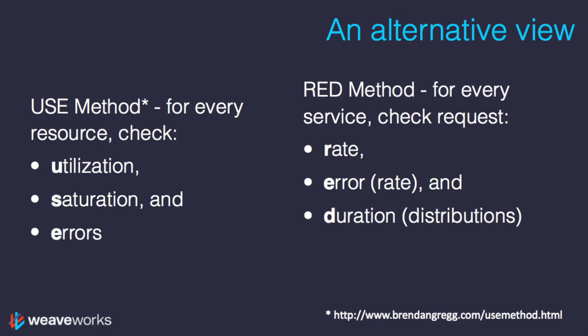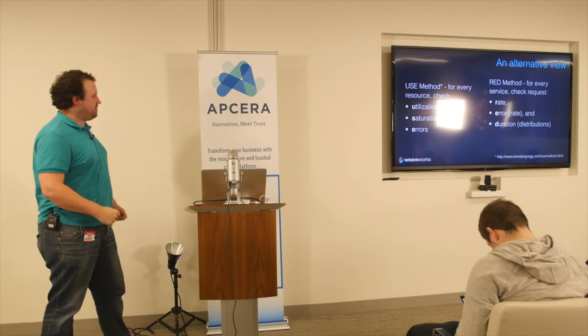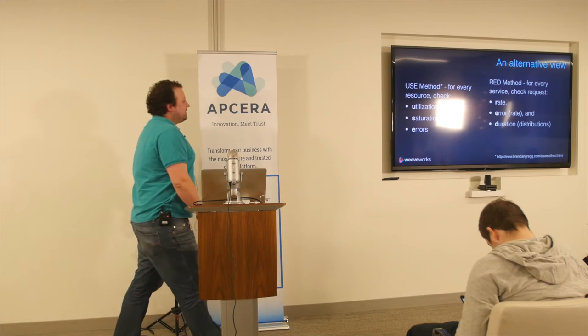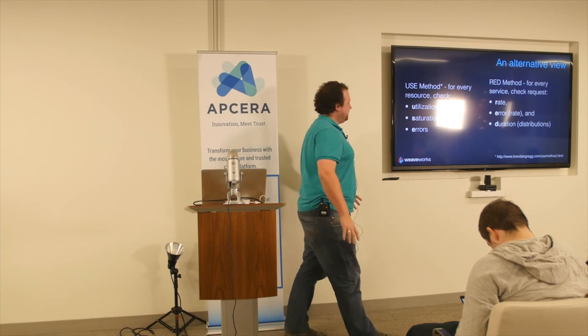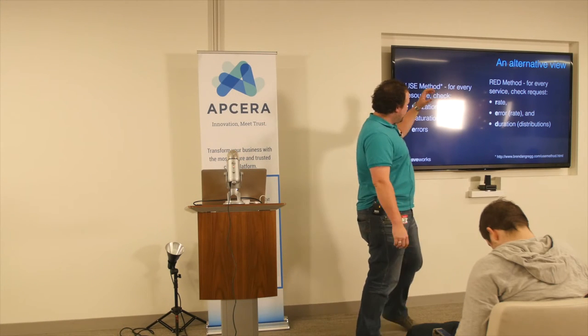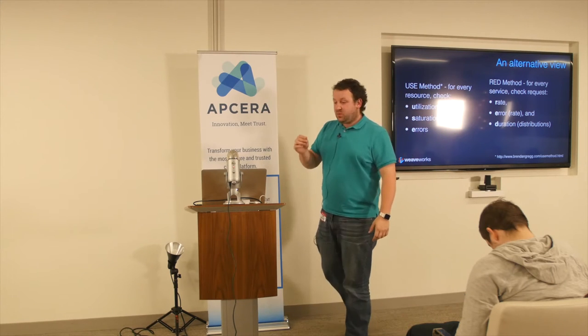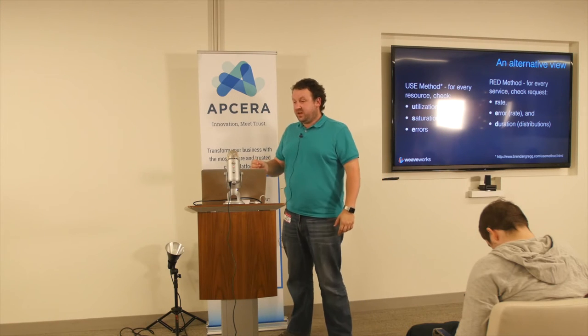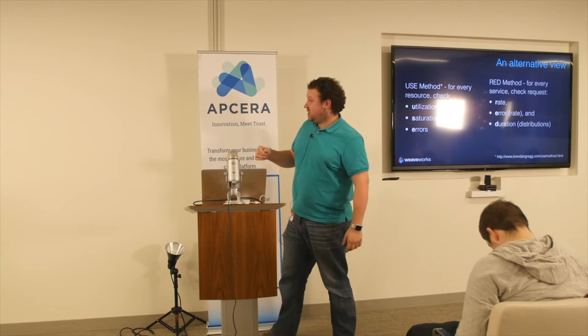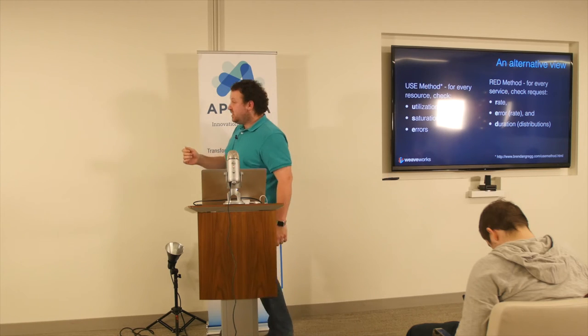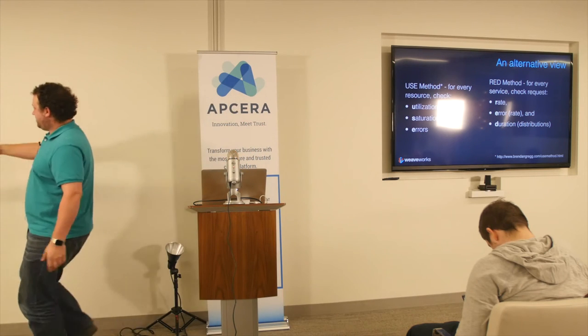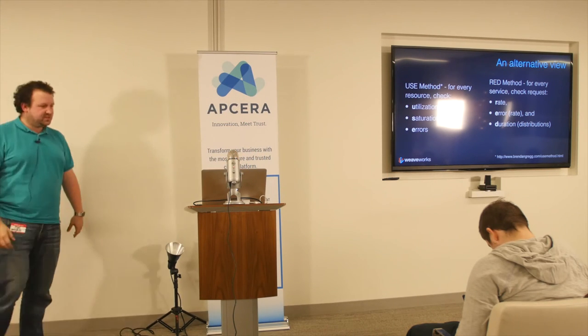I think we should do — I've invented this, it's tongue-in-cheek — I'm calling it the RED method. I think we should be monitoring for every service, not every resource. We should be monitoring the request rate, the error rate, and the latencies — but I had to call it duration, otherwise it would be REL, which would make no sense.